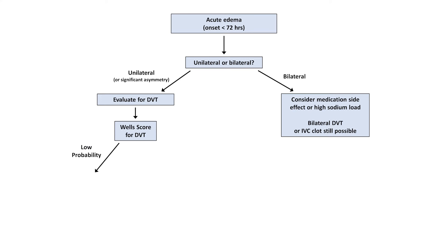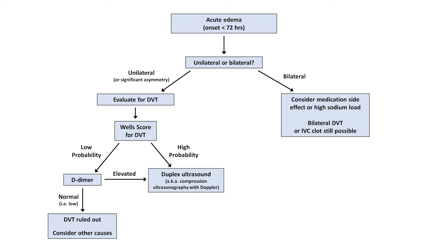If low probability, check a serum D-dimer test. A normal D-dimer in a patient with a low clinical probability rules out a DVT and other causes should be considered. On the other hand, if either the clinical probability is high or the D-dimer is elevated, obtain a duplex ultrasound of the affected extremity. This test is also known as compression ultrasonography with Doppler. If the test is positive, a DVT has been ruled in. But if the test is negative, a DVT has not necessarily been ruled out. Guidelines recommend to consider a repeat ultrasound in one week, particularly if clinical suspicion remains high.